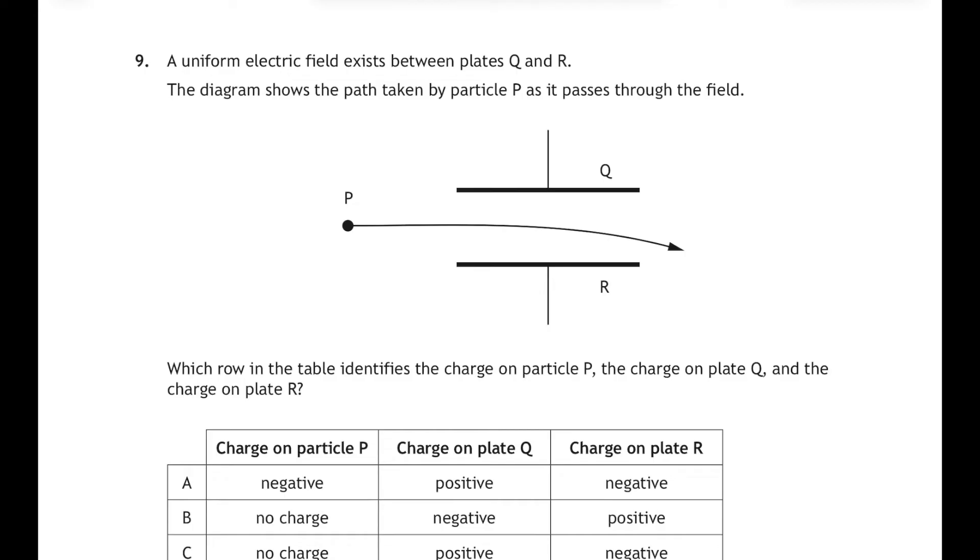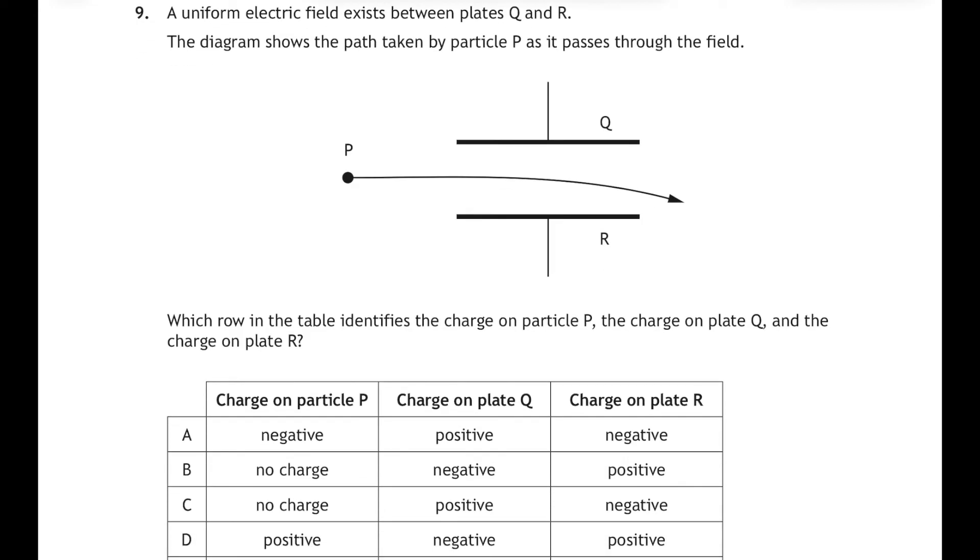Question nine: a uniform electric field exists between plates Q and R. The diagram shows the path taken by a particle P as it passes through the field. So which row in the table identifies the charge on particle P and the charge on plate Q and the charge on plate R?